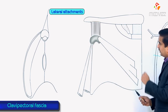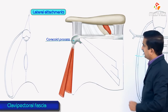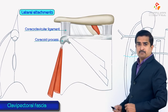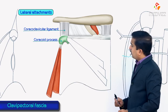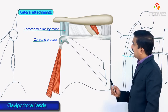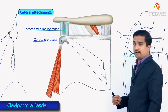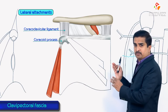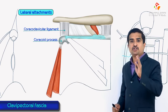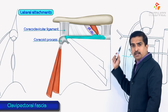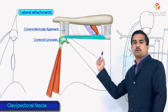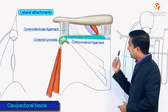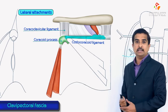Laterally, the clavipectoral fascia has two important attachments: the coracoid process of the scapula and the coracoclavicular ligament. The thickened upper part of the fascia, extending from the first rib near the costochondral junction to the coracoid process, is called the costocoracoid ligament.